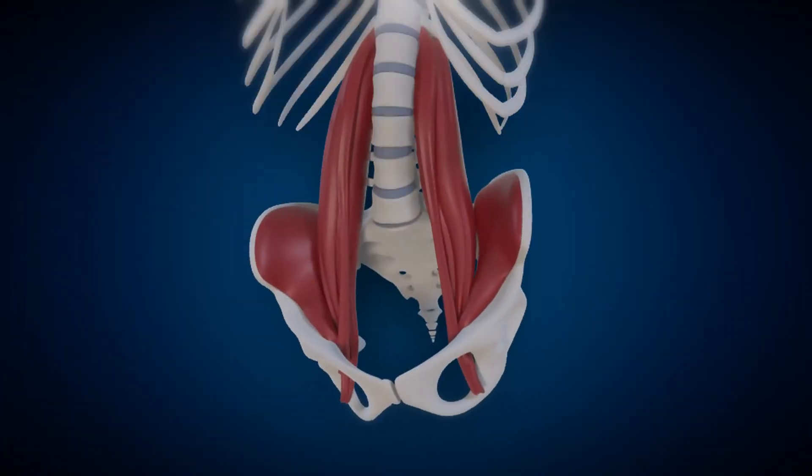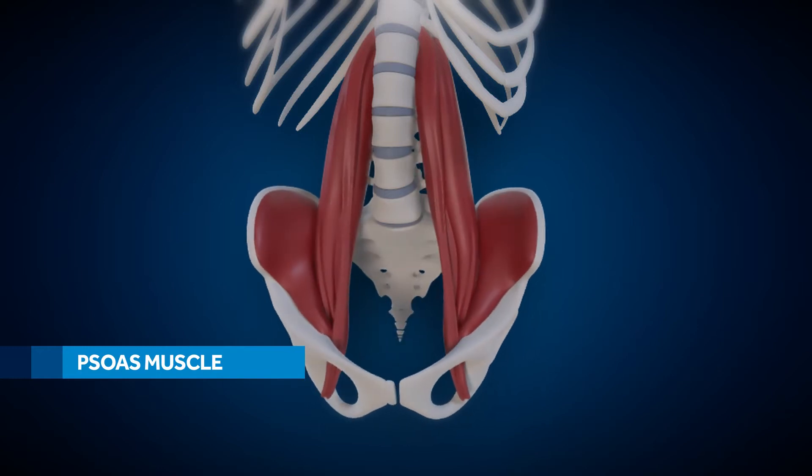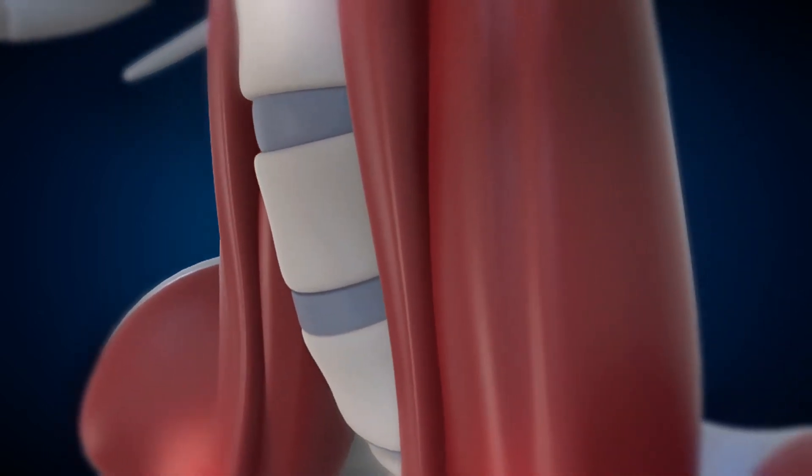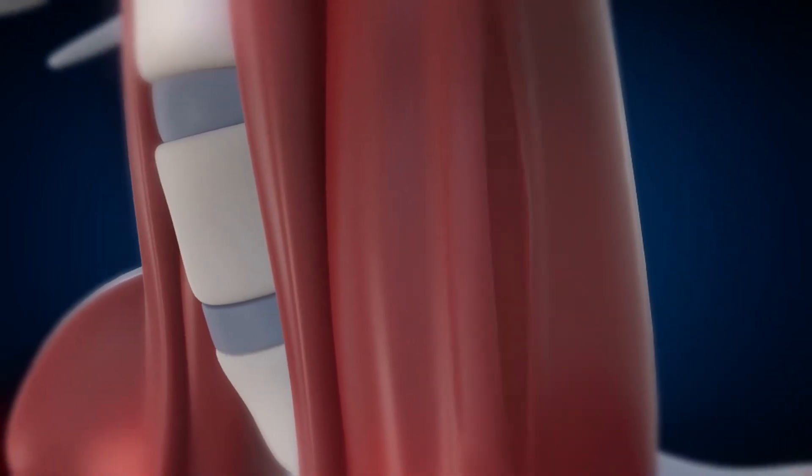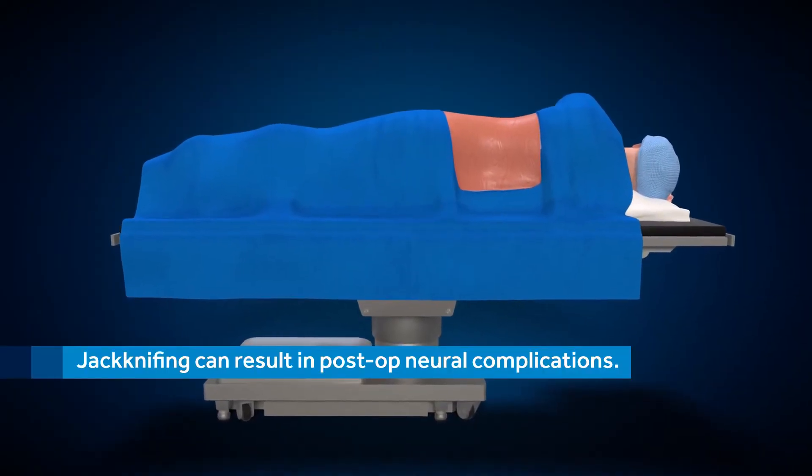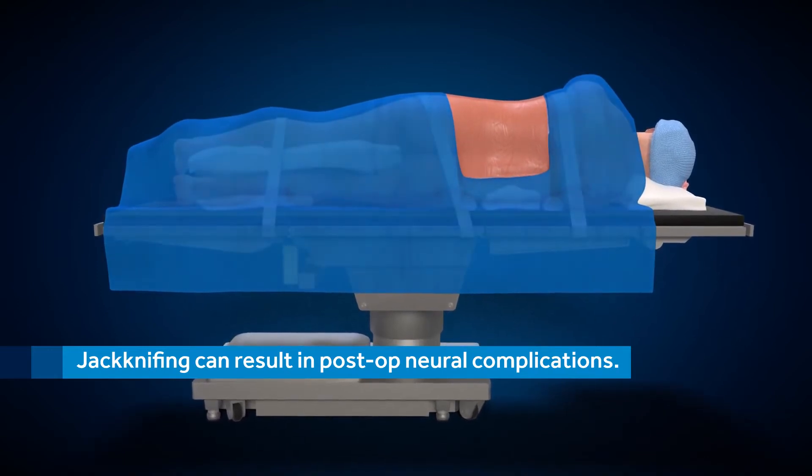The psoas muscle in the lumbar spine contributes to hip joint flexion and rotation. In traditional trans-psoas approaches, dilation and retractor placement through this muscle can lead to muscle trauma and potential nerve injury. Stretching a muscle by jackknifing the patient and surgical table and dilating through the muscle can result in transient post-operative neural complications.